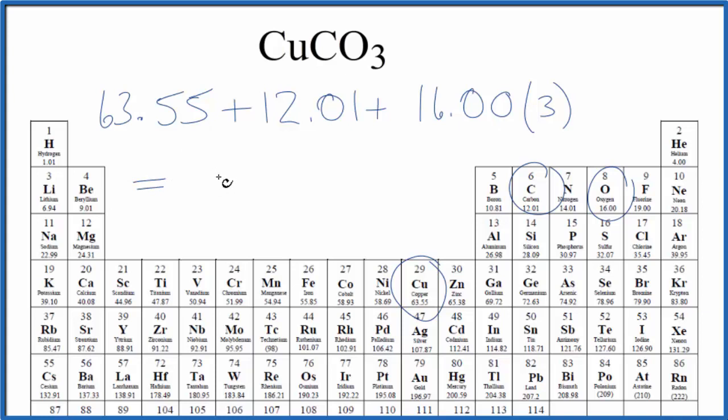We end up with a molar mass for CuCO3, that's the copper carbonate, of 123.56, and the units are grams per mole. That means if we have one mole of copper carbonate here, it's going to have a mass of 123.56 grams.